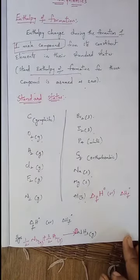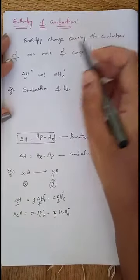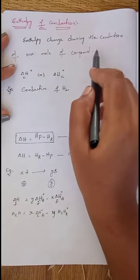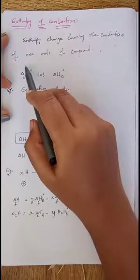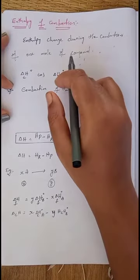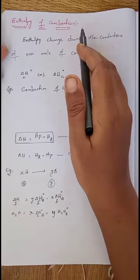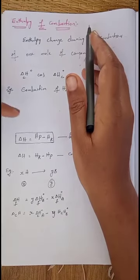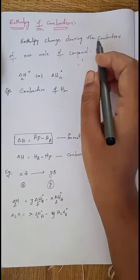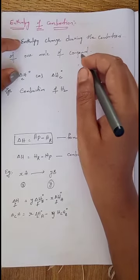Now we will see what is enthalpy of combustion. Enthalpy of combustion is the enthalpy change occurring during the combustion of one mole of a compound. When a compound burns, its heat energy may increase or decrease — that change in enthalpy during combustion of one mole at standard condition is called standard enthalpy of combustion.